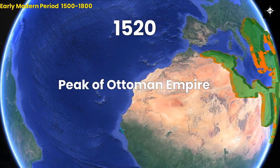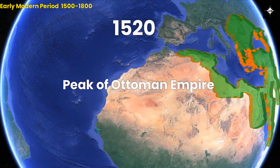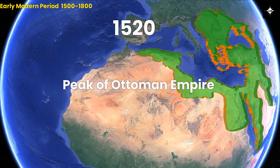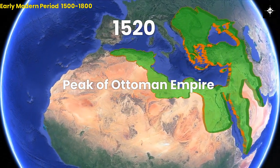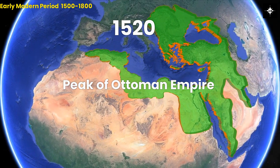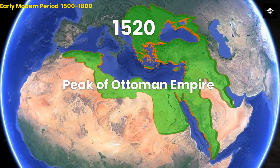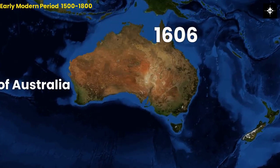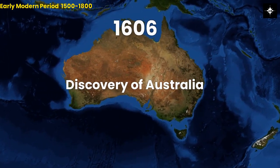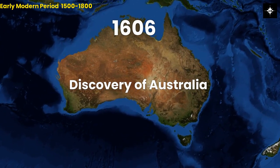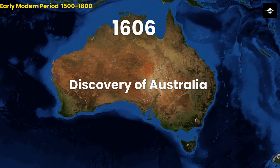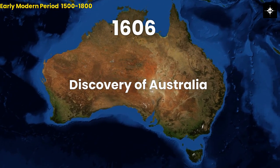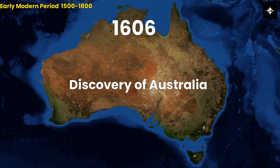Second, 1520 CE, the peak of the Ottoman Empire. The Ottoman Empire reached its zenith, encompassing much of Southeast Europe, Western Asia, and North Africa under the reign of Suleiman the Magnificent. Third, 1606 CE, the continent of Australia was discovered. Dutch navigator Willem Jansson became the first recorded European to discover the continent of Australia.